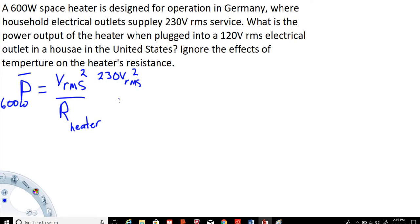What we're going to do here is solve for the equivalent resistance of the heater. We're going to multiply the resistance and then divide over the average power, and that will get us the resistance.